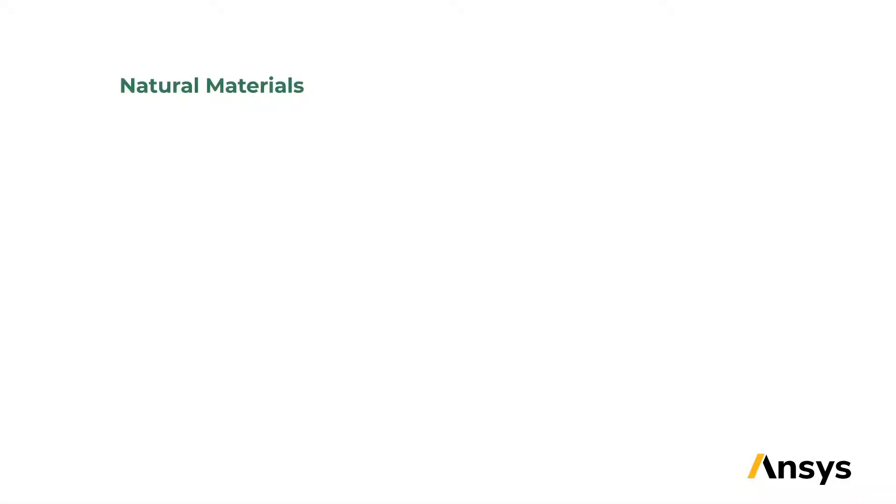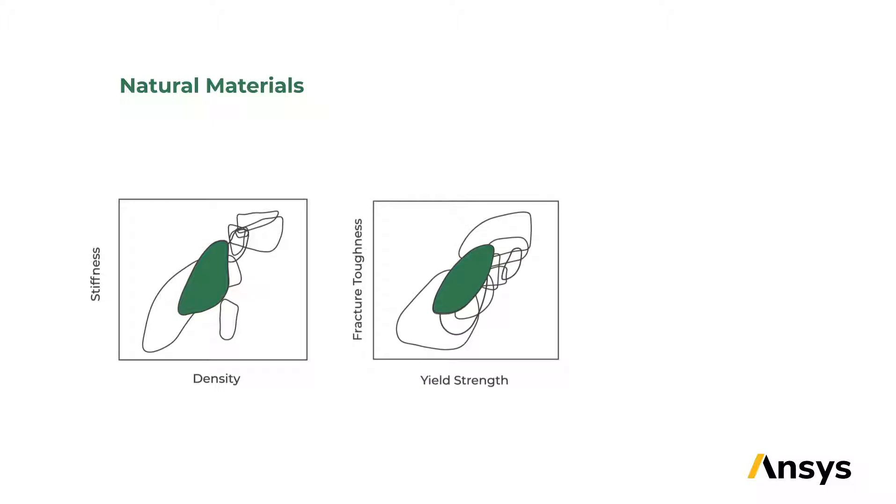Natural materials have a wide range of properties. Just think of how diverse nature is. Natural materials can fit in that middle category of stiffness and density, like polymers. Same with fracture toughness and yield strength.